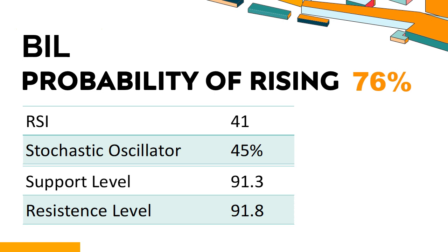The current stochastic oscillator of BIL is 45%, indicating that the stock is experiencing a strong downtrend and strong selling pressure. In this case, an oversold signal may indicate that a stock is hitting a temporary bottom, but it doesn't necessarily mean that the trend will reverse immediately.